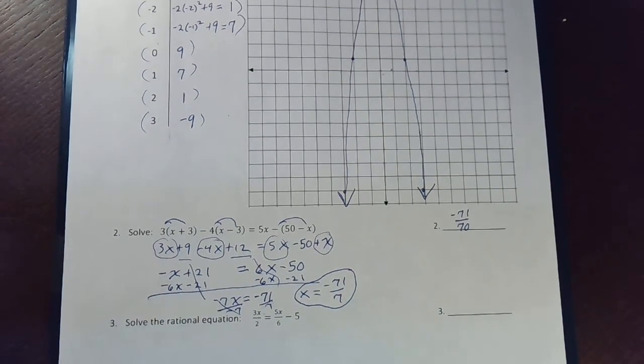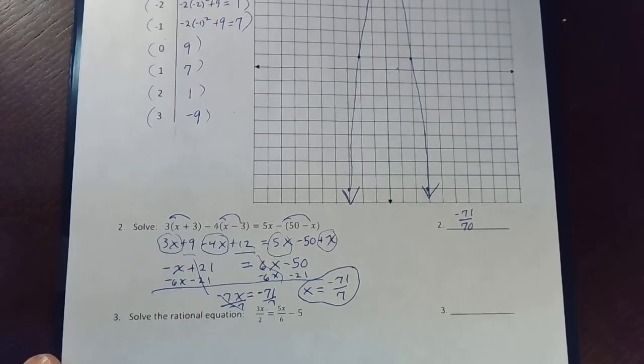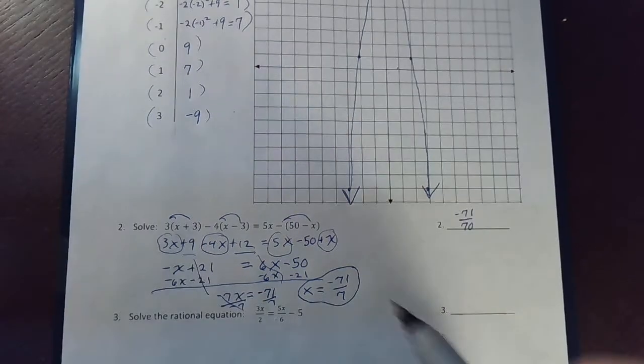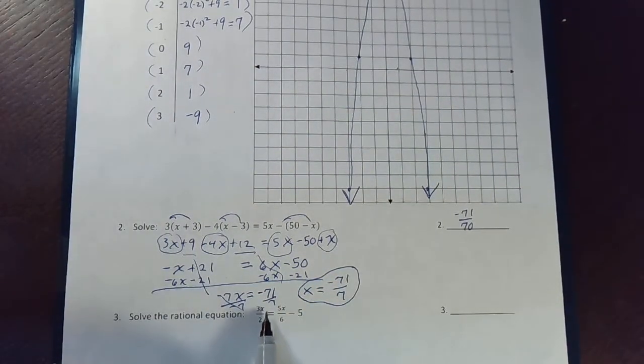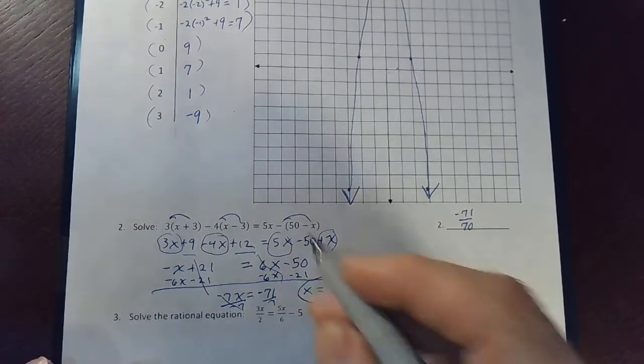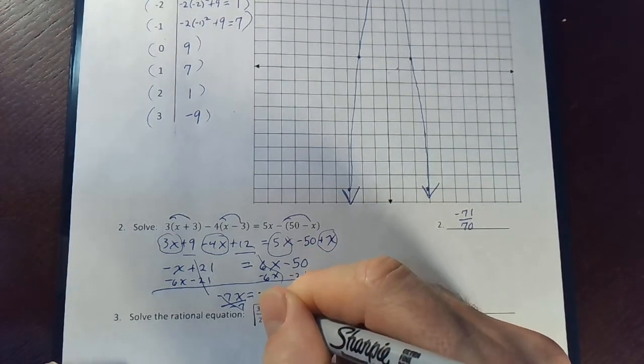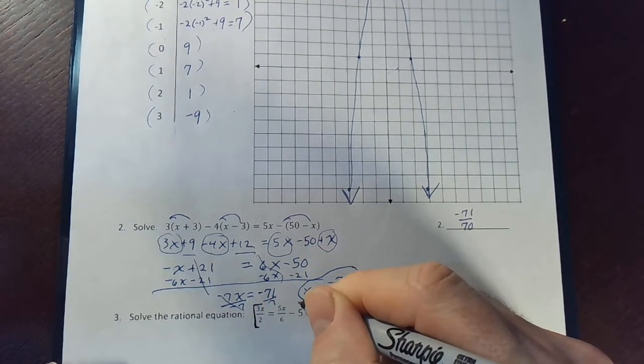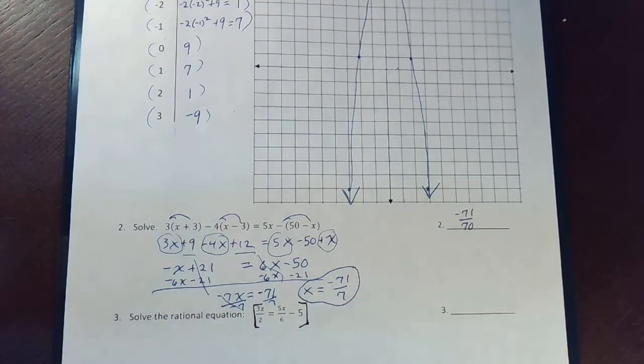All right, one more problem on this page. I'm going to use a different color here. This is called a rational equation. It has fractions in it. And what I'm going to do, in one step, I'm going to clear the fractions out by multiplying the entire equation by the least common denominator of all the fractions.